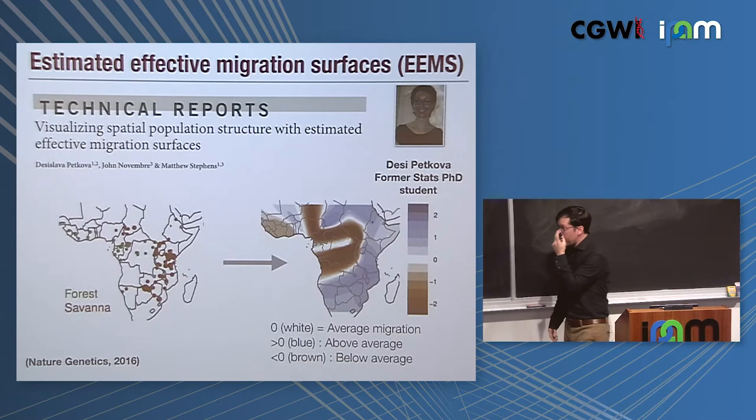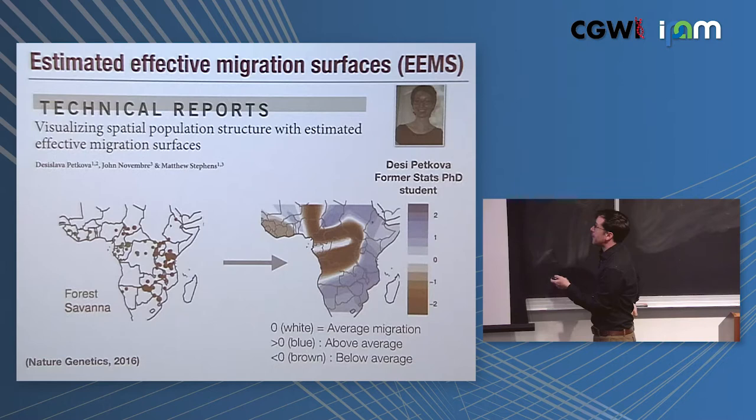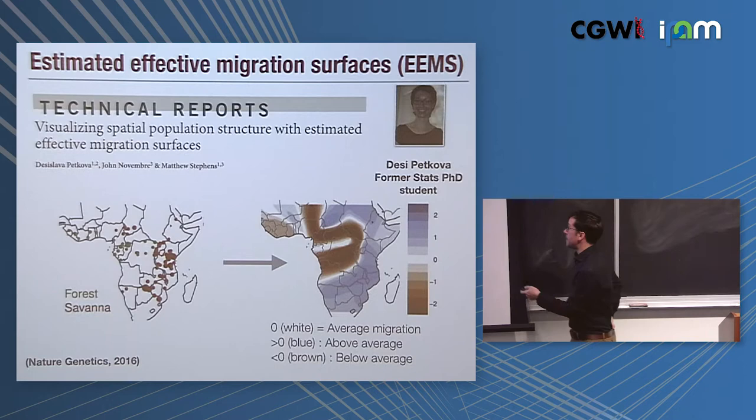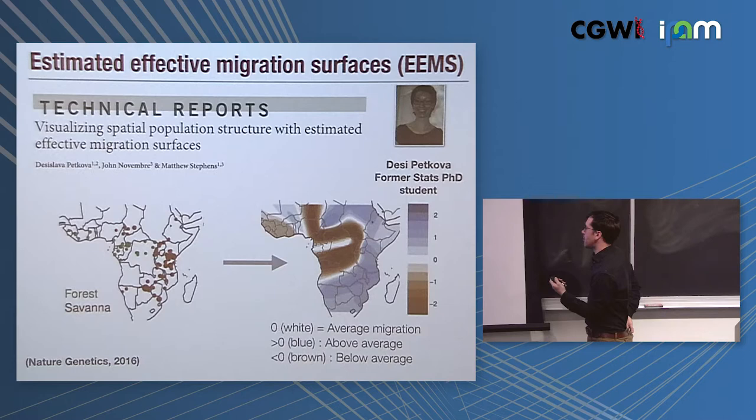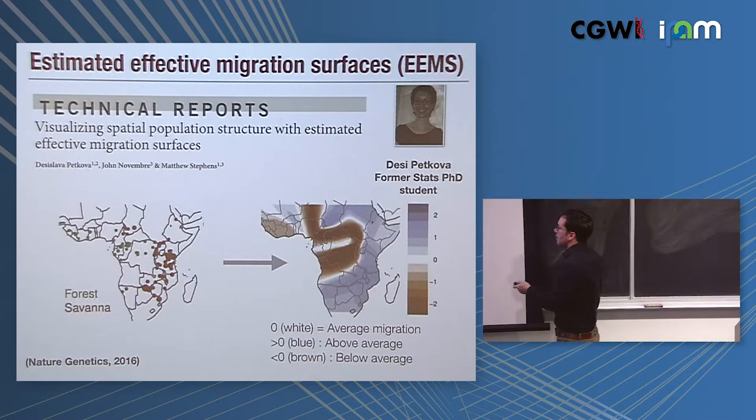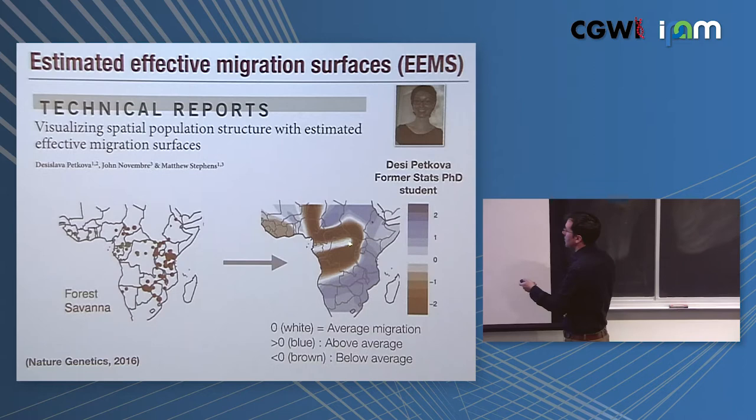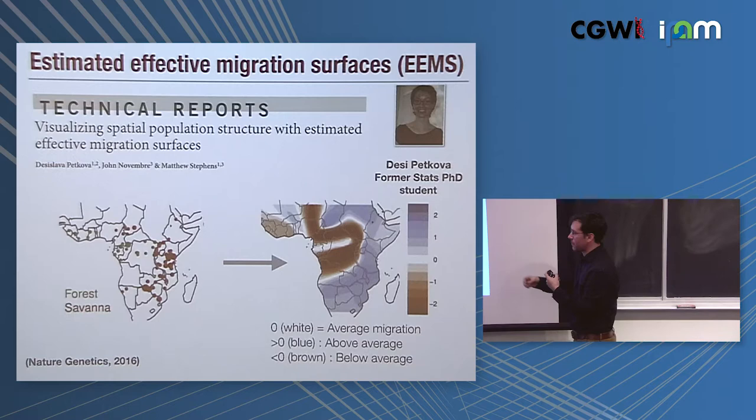It motivated us to develop a new method that would use the geographical information of the samples that we have to help us recognize we have sampled a lot of this population and not a lot of that other one, then adjust for the uneven sampling, and then still provide some insight to the genetic relationships amongst the samples. That method that we've developed is called EAMS. It's a project that started when I was first at UChicago, and then Desi Petkova picked it up and finished and published in 2016. Desi did a fantastic job with this. This is the idea: we're going to take our samples that have geographic locations, we have genetic data on the individuals, and we want to return as a summary of the population structure a map that shows regions where individuals are very similar to one another.